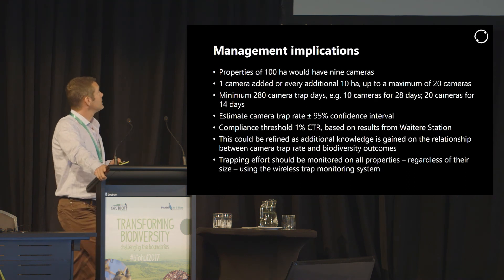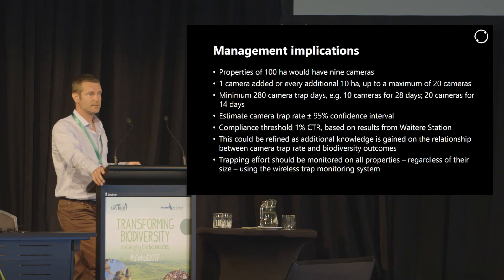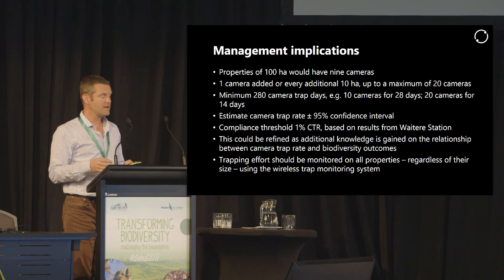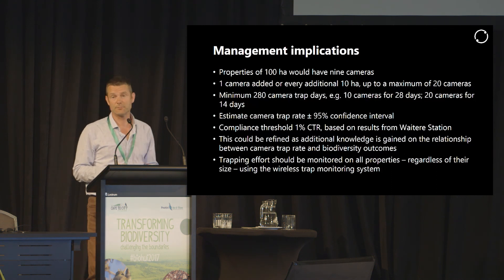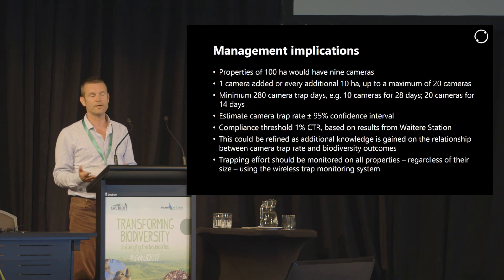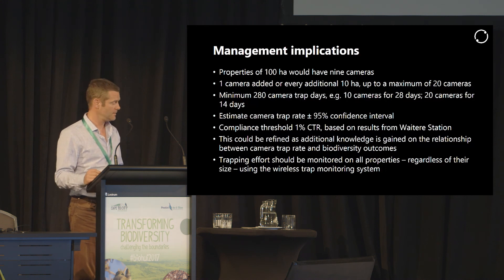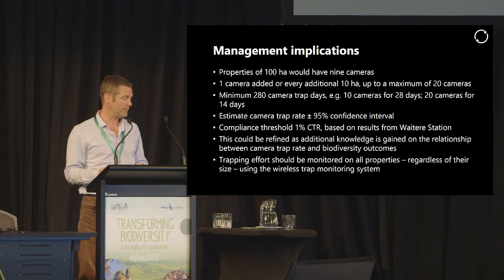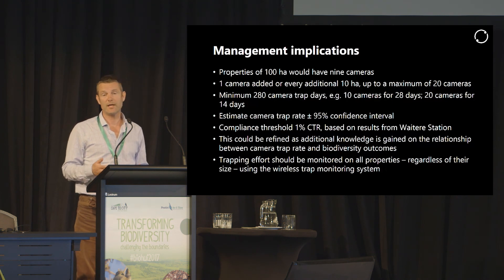Just very quickly, the management implications. The suggested approach is that properties of 100 hectares would have nine cameras on them to monitor for compliance, and as properties get larger we add one more camera for every 10 hectares up to a maximum of 20 cameras. We would need at least 280 camera trap days — so 10 cameras for 28 days — and based on that we would be looking for a camera trap rate of less than 1%. This can be refined as we get more knowledge. Regardless of what happens with the camera trap monitoring, we also suggest monitoring the trapping effort that landowners are putting in using the wireless network monitoring system.